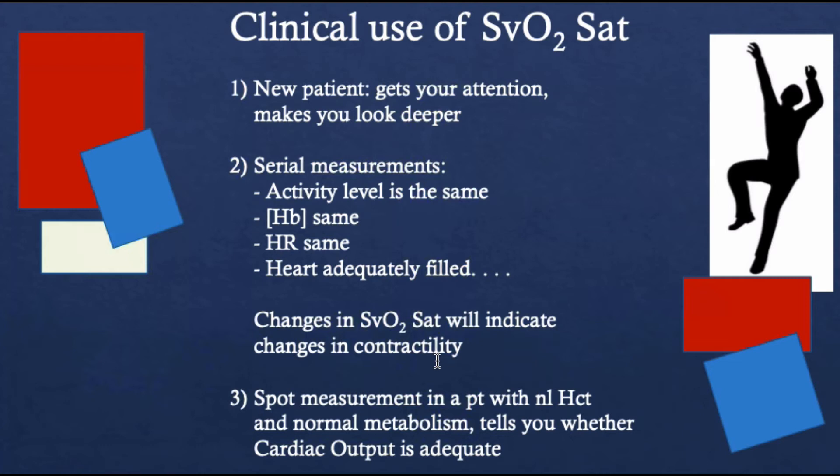For example, you might have someone that you're weaning from a dobutamine infusion they've been on for several days. You're trying to increase afterload and ask yourself, does this patient really need all this dobutamine? As you back off with the dobutamine, you can look at mixed venous O2 saturations and see whether that falls off precipitously, indicating whether you have enough forward flow. Also, in a patient when you have a normal hematocrit and normal metabolism, a spot value will help you zero in on cardiac output as being a problem.